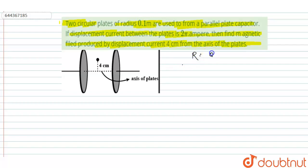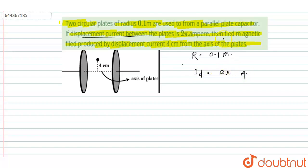Given in this question: the radius of the plate R is equal to 0.1 meter, and the displacement current id is equal to 2π ampere. We have to find the magnetic field at a distance of small r equal to 4 centimeters, which is 0.04 meter, from the axis of the plate.